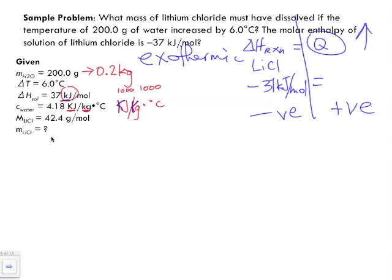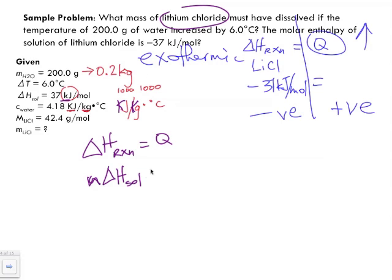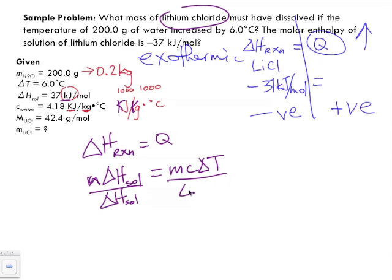As stated, delta H of reaction equals q, where delta H equals n times delta H of solution (it's a solution because lithium chloride is dissolving in water), and q equals mc·delta T. To find n, we divide both sides by delta H of solution, giving us: n = mc·delta T divided by delta H of solution.